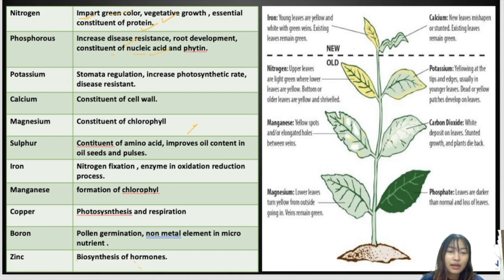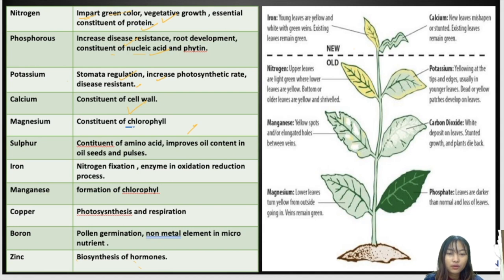Potassium helps in stomata regulation — that is the opening and closing of the stomata — and also increases the photosynthetic rate and disease resistance. Calcium is a constituent of the cell wall. Magnesium is a constituent of chlorophyll. Sulfur is a constituent of amino acids and also improves the oil content in oil seeds and pulses.